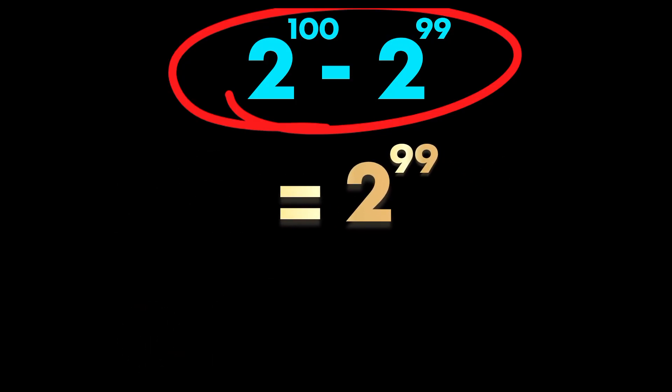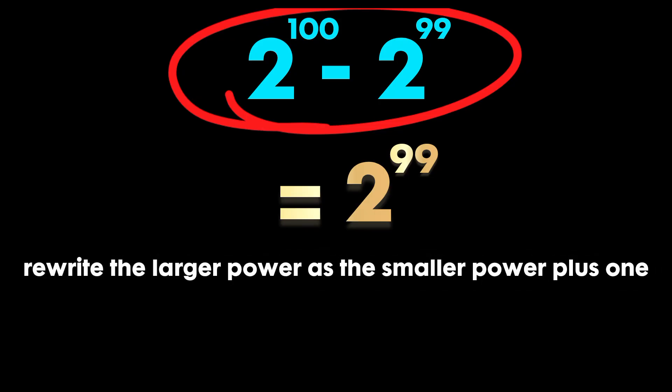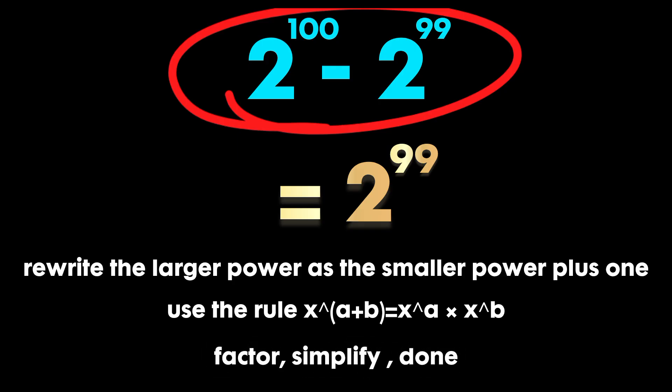Recap in three lines. 1. Rewrite the larger power as the smaller power plus 1. 2. Use the rule x to the a plus b equals x to the a times x to the b. 3. Factor, simplify, done. 2 to the power of 99.